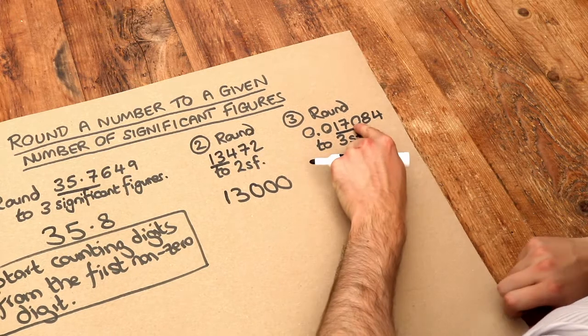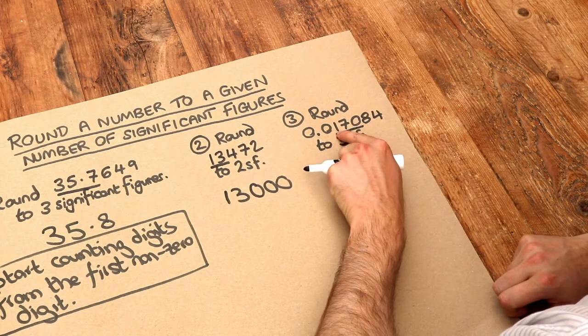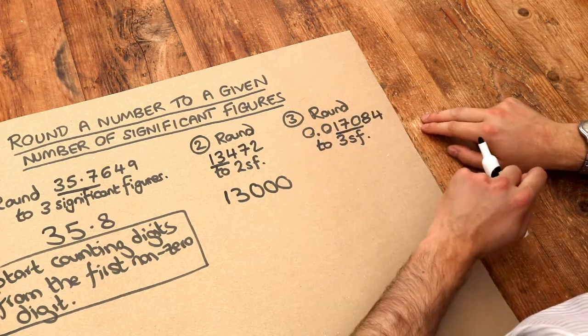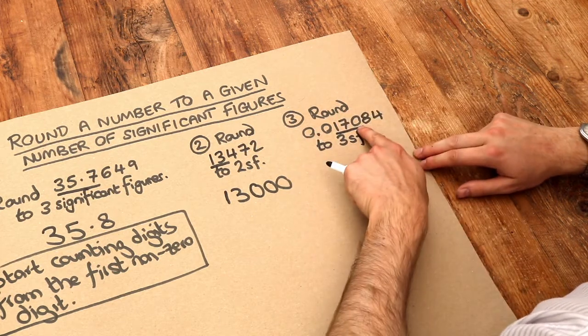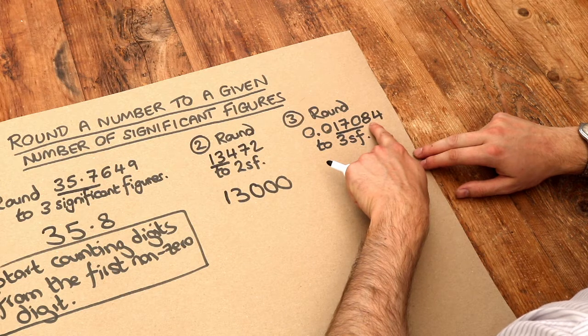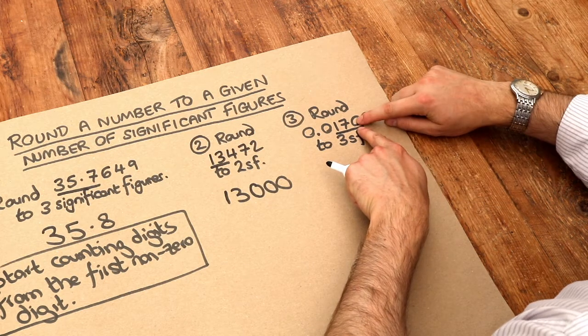And note by the way that any zeros after when we start counting from still count. It's only the leading zeros that we want to ignore. Now as always we look at the digit after what we underlined. That's an eight. Is that a five or above? Yes it is. So that zero goes up to one.